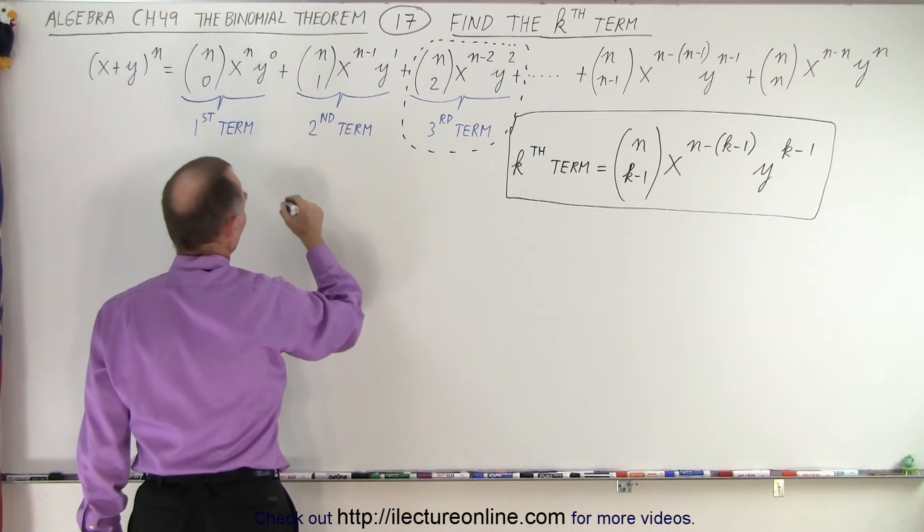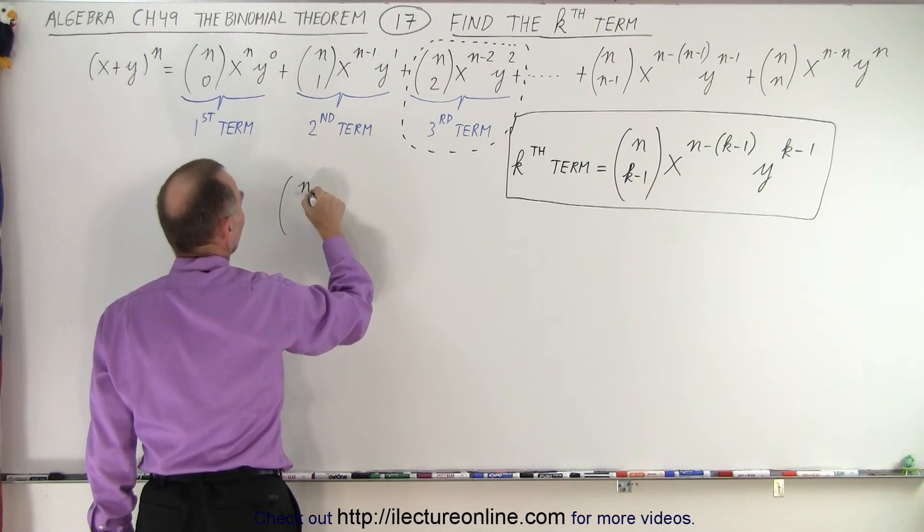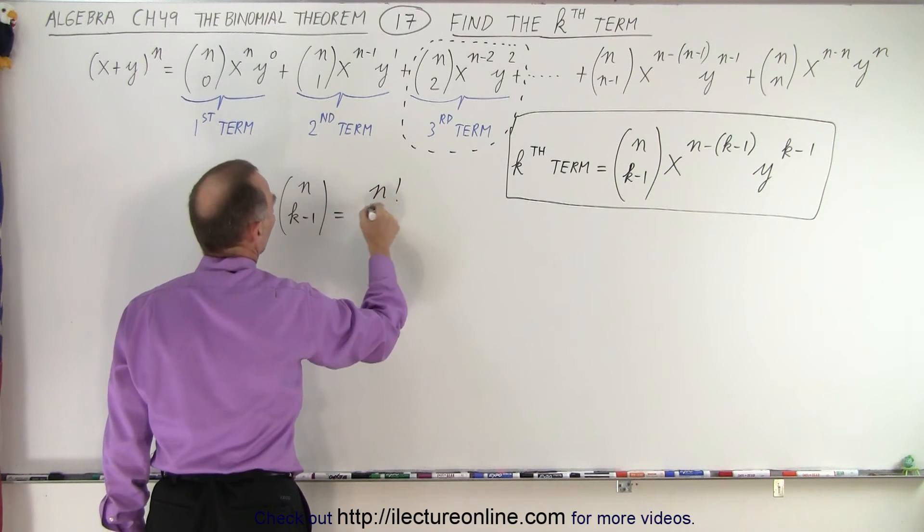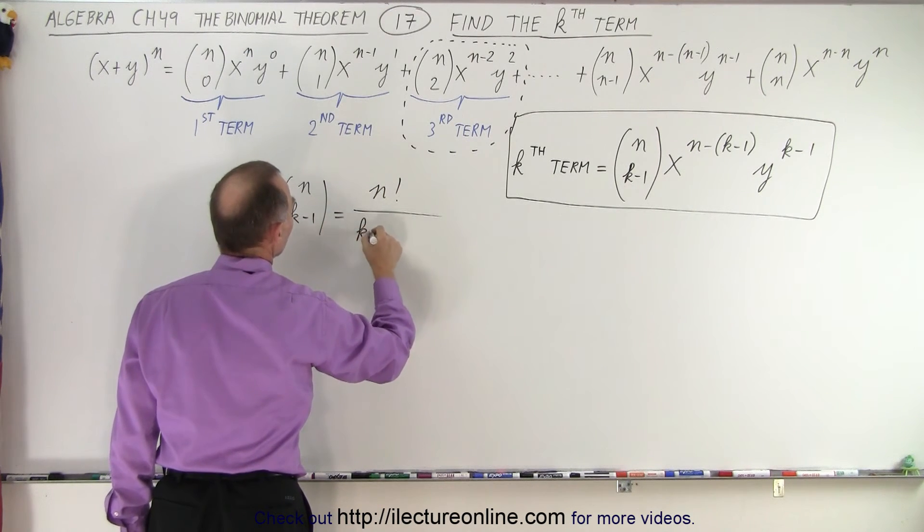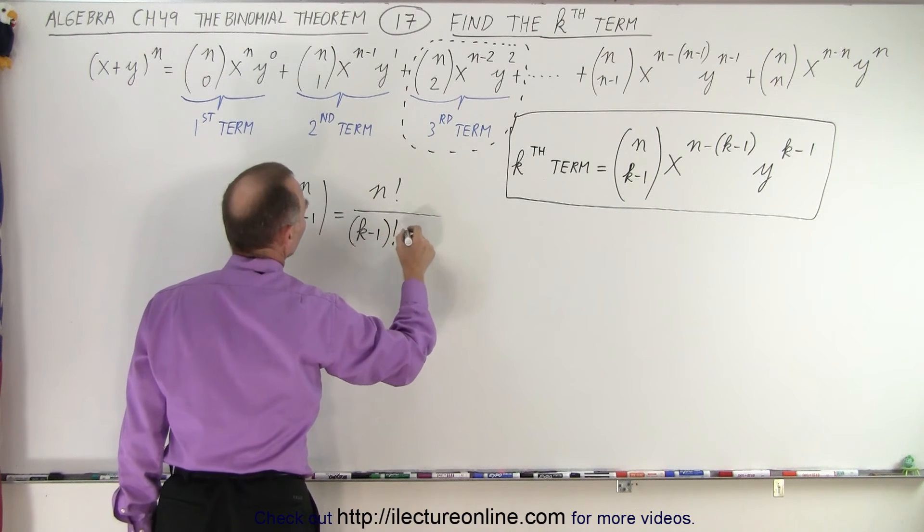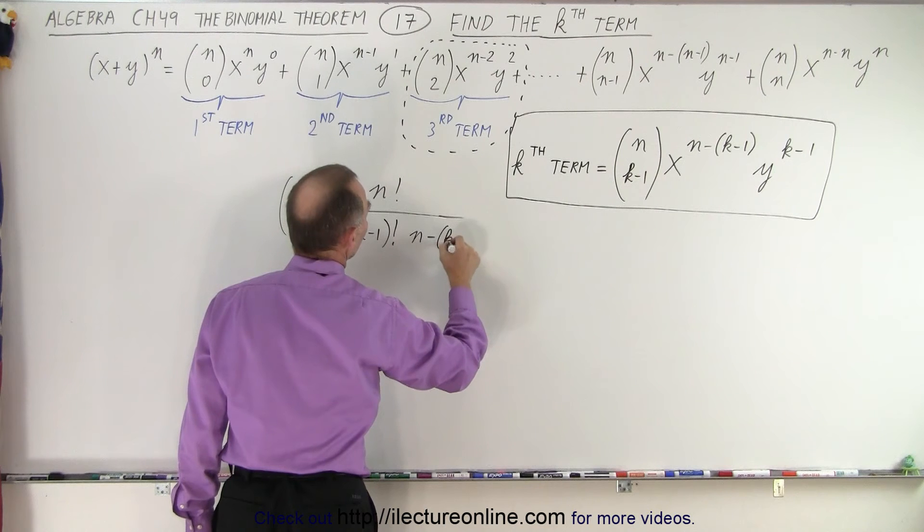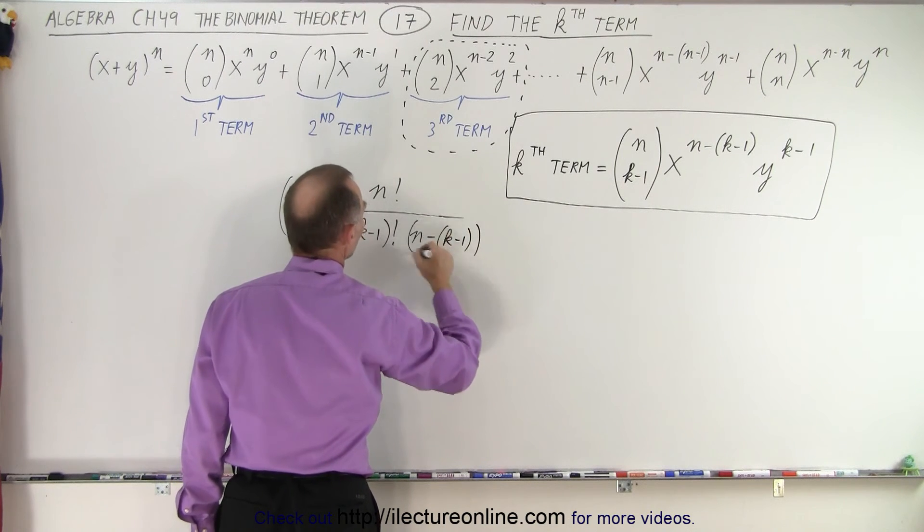let's write this out. When we have n choose (k-1), this equals n! divided by (k-1)! divided by (n - k + 1)!.